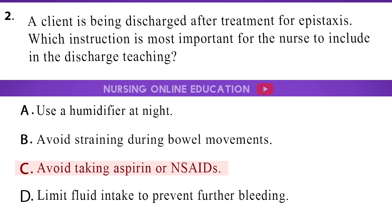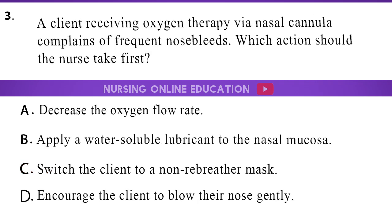The answer is option C: Avoid taking aspirin or NSAIDs. A client receiving oxygen therapy via nasal cannula complains of frequent nosebleeds. Which action should the nurse take first? A. Decrease the oxygen flow rate. B. Apply a water-soluble lubricant to the nasal mucosa. C. Switch the client to a non-rebreather mask. D. Encourage the client to blow their nose gently.